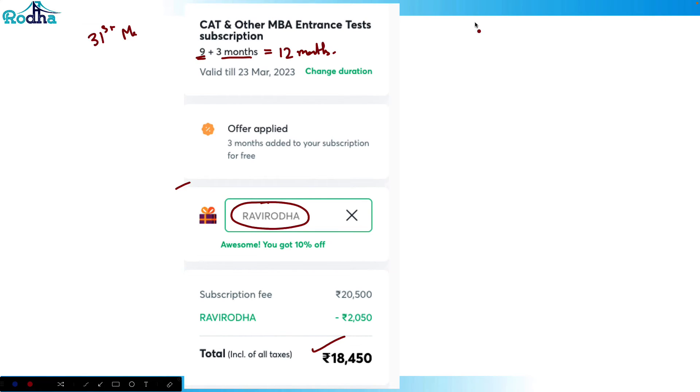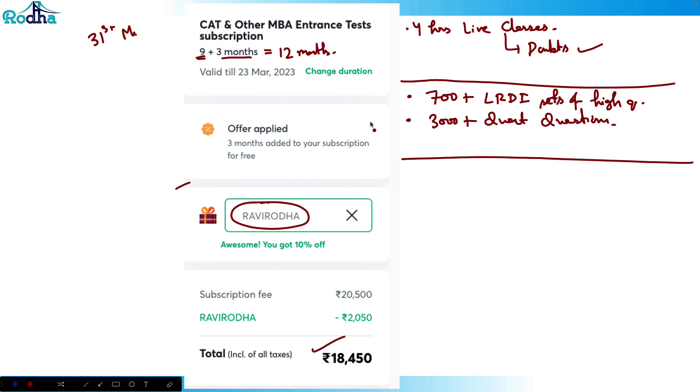So apart from all the live classes, every day I take some four hours of live classes. Those who prefer live classes, the doubts get cleared there, you don't get bored in the class. But if you don't want live classes then there's only my course, 700 plus LRDI sets of high quality and some 3000 plus quant questions. There's only mine that is solved by me actually.